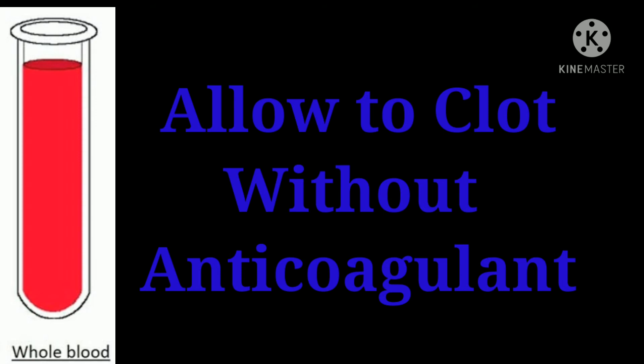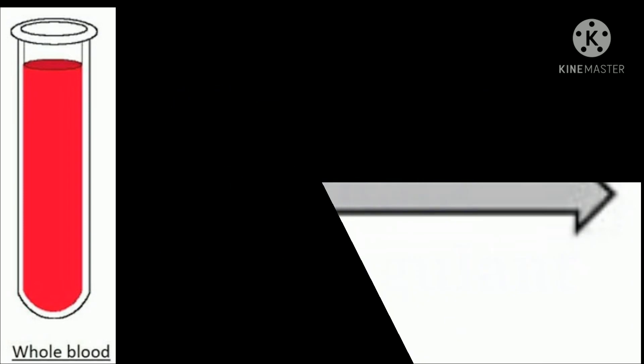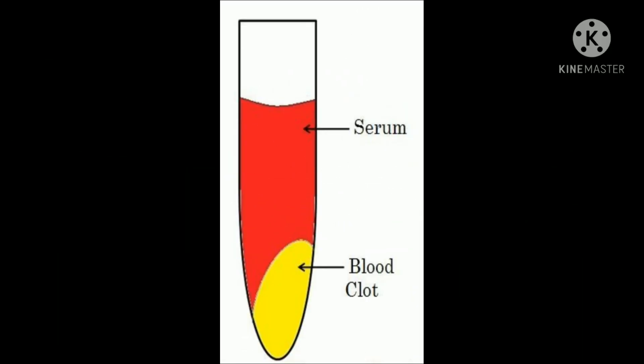we then subject it to centrifugation. After centrifugation, the upper layer obtained is serum, and the layer which settled at the bottom is the clotted blood.